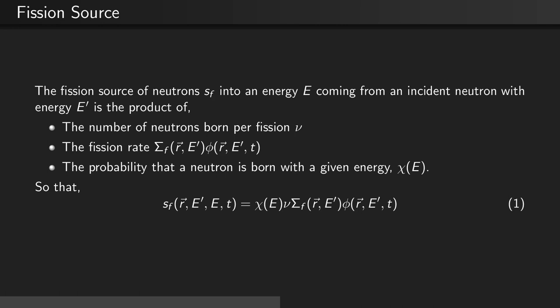So that, therefore, the source of fission neutrons that take an incident neutron of energy E' to an exiting energy E is given by chi(E) times nu times the macroscopic fission cross-section times the scalar flux.